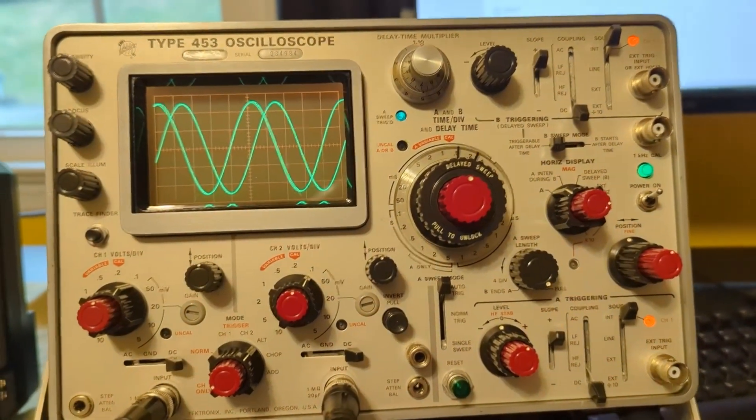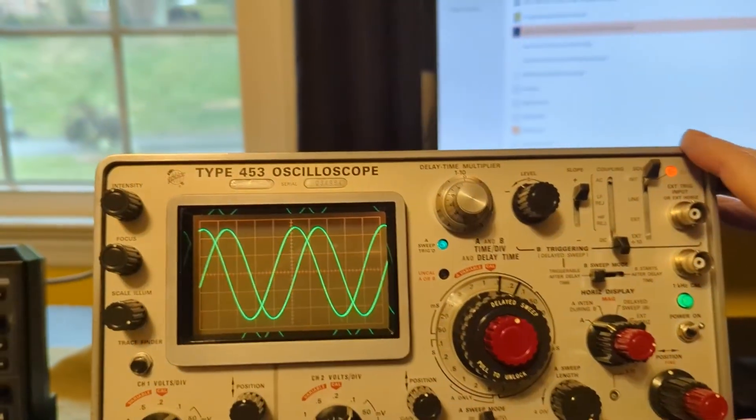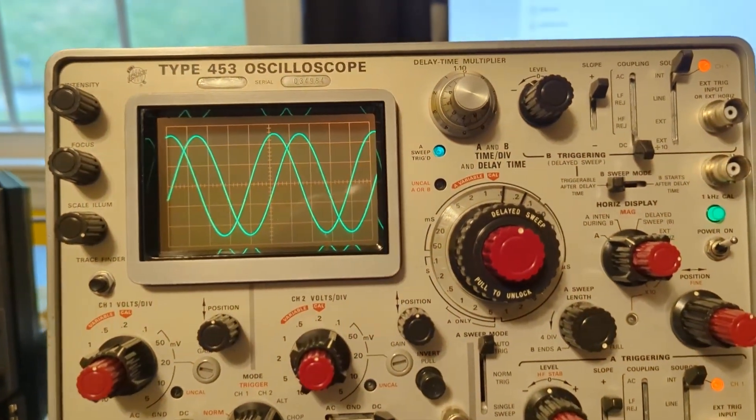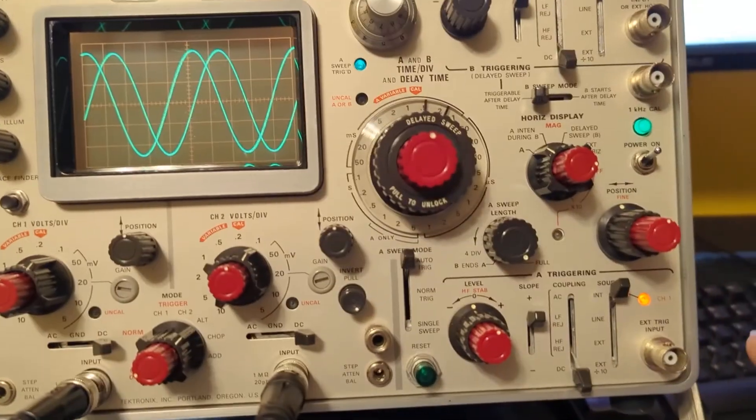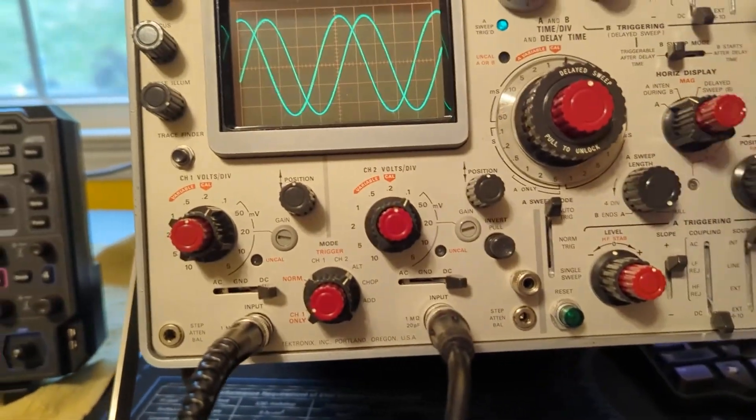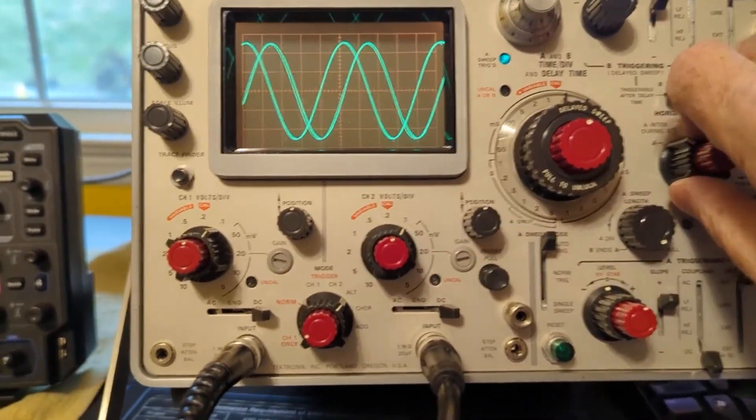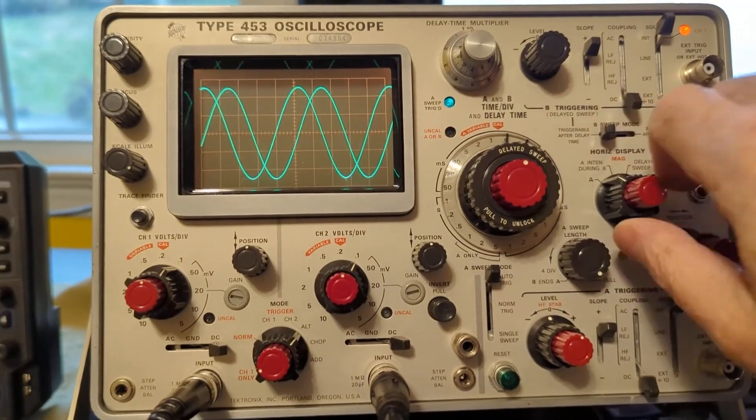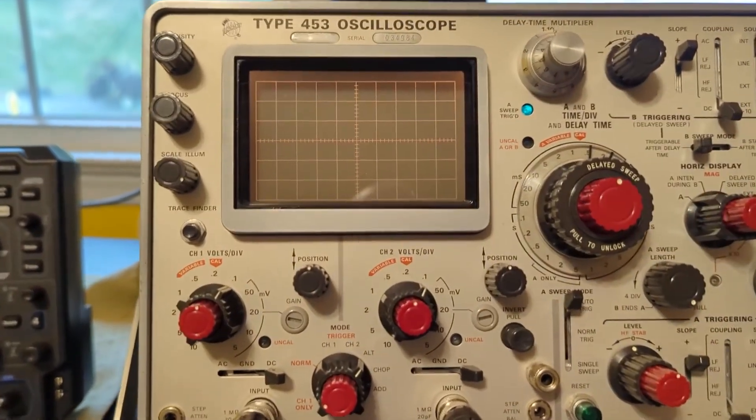Also, the source should be internal, and source should be internal up on B. So you can see the light come on on both sides here. And I've got positive slope, although I don't think that matters. So now I'm going to switch this to external horizontal, and it seems like things went away.